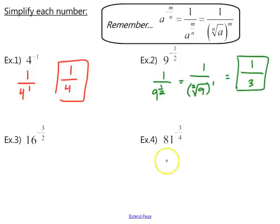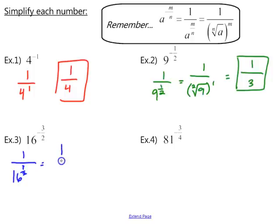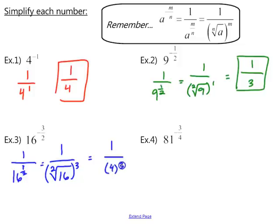For examples 3 and 4 we follow the same process. In example 3, first make the exponent positive: 1 over 16 to the positive 3 halves. Convert to radical notation — 16 goes under the radical with an index of 2, raised to the third power. The square root of 16 is 4, and 4 cubed gives us a final simplified answer of 1 over 64.